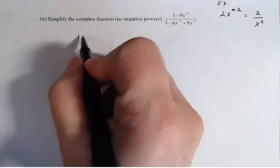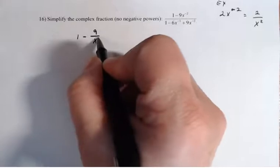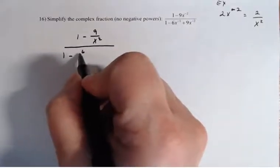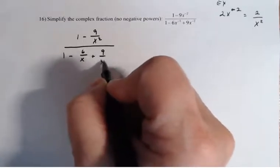So I'm going to rewrite this statement as 1 minus 9 over x squared divided by 1 minus 6 over x plus 9 over x squared.